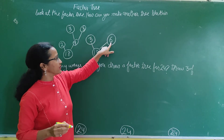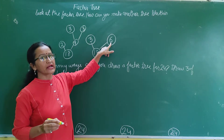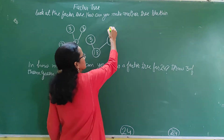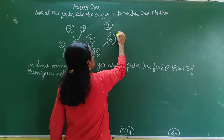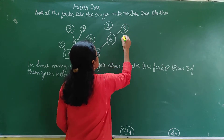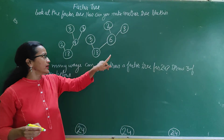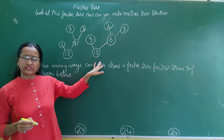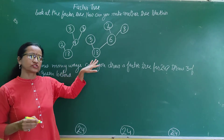Now we can break 6. So 2 threes are 6. So right here write 2 and 3. 2 threes are 6. In this way you can make the factor tree. This is called a factor tree.